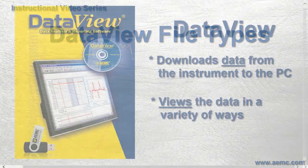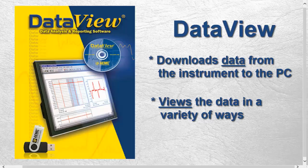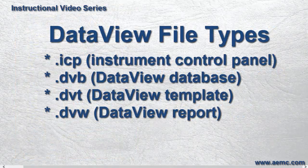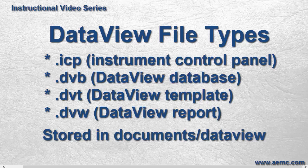As explained in several other videos available on AEMC's YouTube channel, the primary purpose of DataView is explained in the product name. The program takes measurement data recorded by your AEMC instrument and presents it for viewing on a PC. There are four main DataView file types involved in this process: ICP, DVB, DVT, and DVW. By default, these files are stored in the computer's Documents folder, in the DataView subfolder.